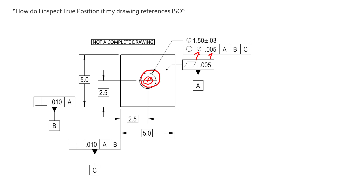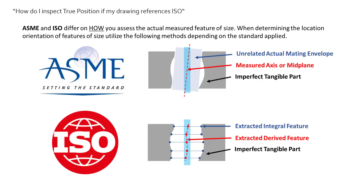Now where ASME differs slightly from ISO is how we get the central element of this hole. ASME clearly tells us we have a central axis of that hole. ISO takes it a little bit differently, and there are two very distinct definitions that ISO and ASME use. ASME will measure an axis, or in the case of a square slot like a keyway, you're controlling the position of a midplane. So let's just focus on the axis here since we're talking about a cylindrical example.